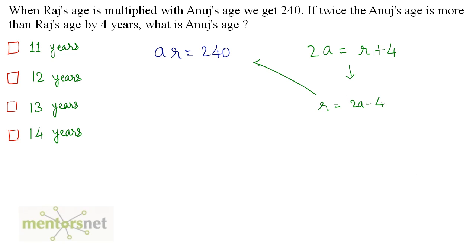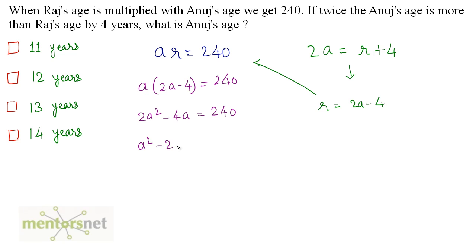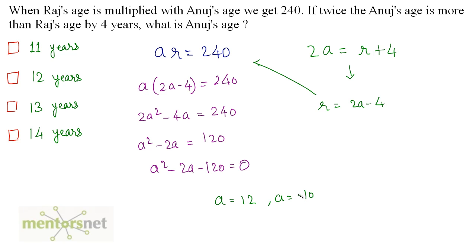Put R into the equation: A times (2A minus 4) is equal to 240. So, 2A squared minus 4A is equal to 240. Dividing the whole equation by 2, we get A squared minus 2A is equal to 120. Rearranging this quadratic equation: A squared minus 2A minus 120 is equal to 0. Solving this gives two values of A: 12 and minus 10. We ignore the negative value because age cannot be negative.